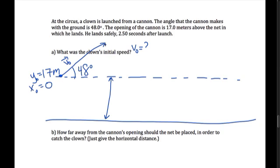And we can find the components of the initial velocity vector. So the x component, v naught x,